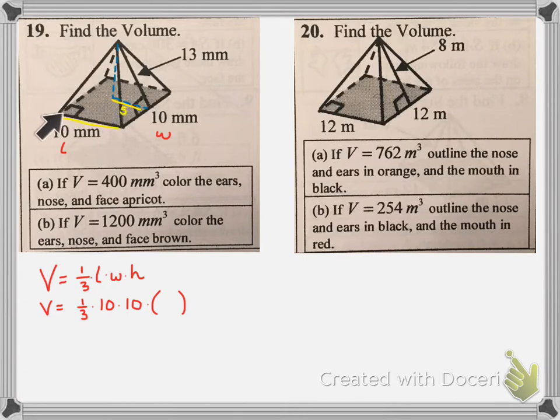And so, this side is five. How do I know that? Well, if this whole thing is 10, when we go straight down from here to here, this is going to be half of your length. So we know that this is five.